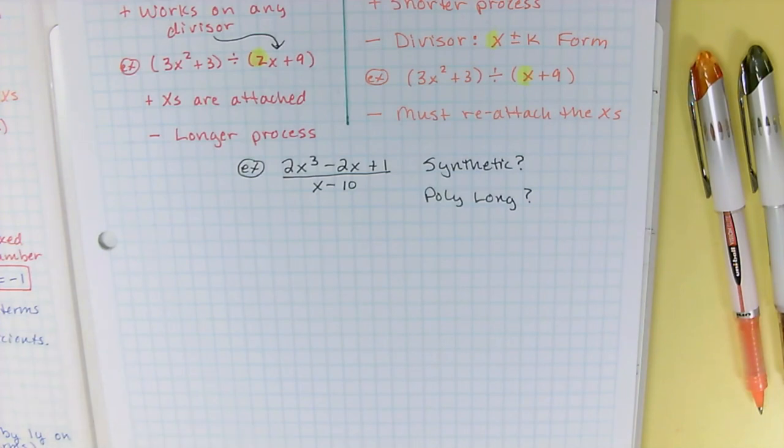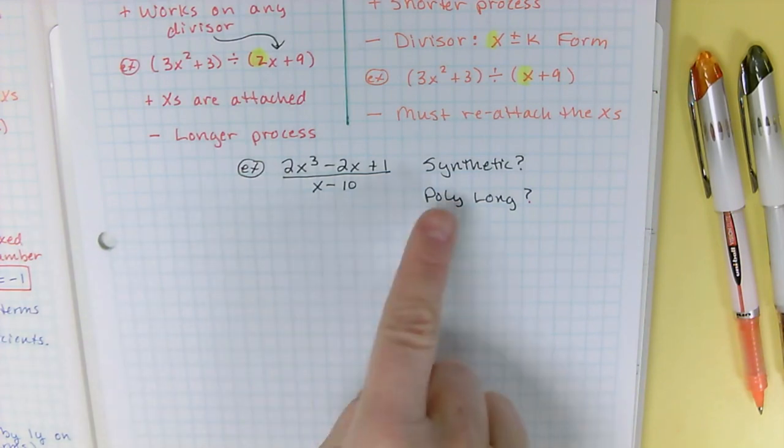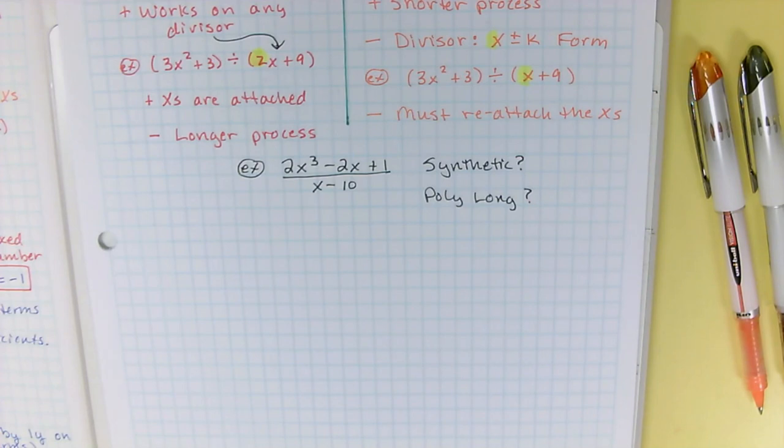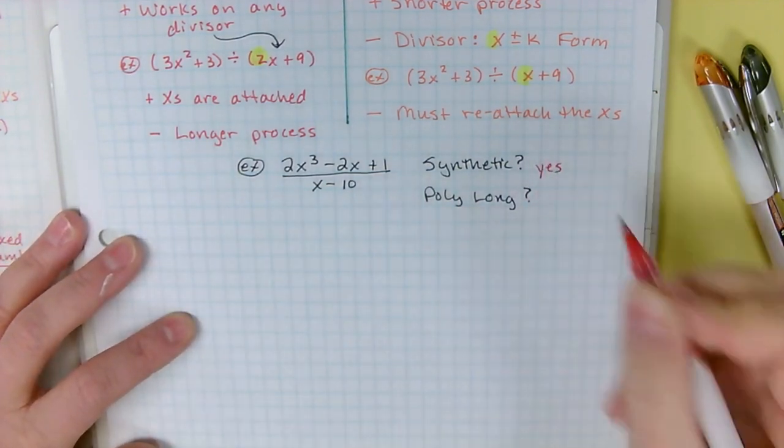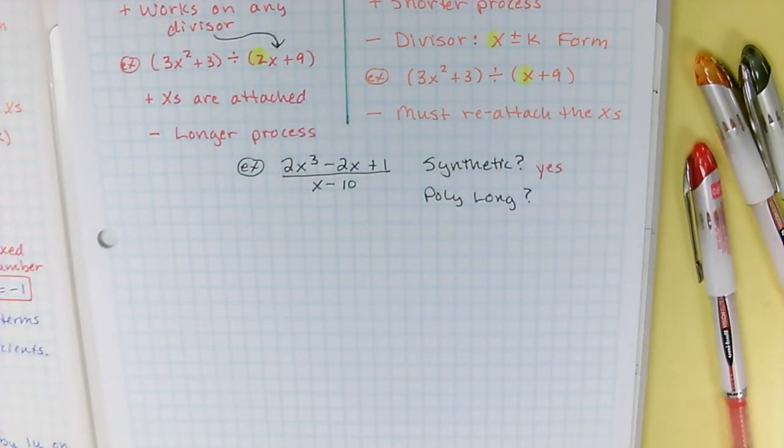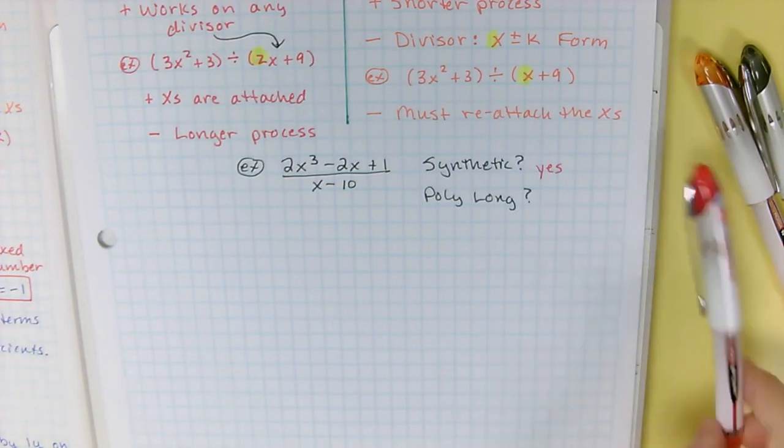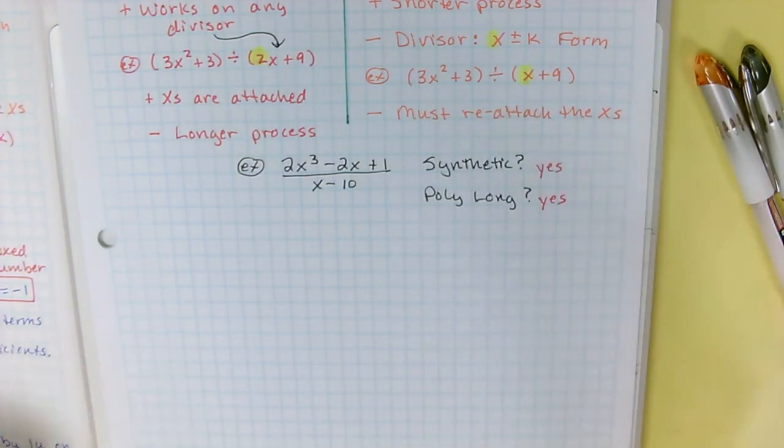Okay, so we're going to do thumbs up, thumbs down. Yes is up, no is down. So on this one, is synthetic possible? So I'm going to thumb up or thumb down? Felix, up. Yes, the ups have it. So yes, synthetic is definitely possible. Okay, thumb up, thumb down. Is polynomial long division possible? Got one more thumb. Okay, yes, poly long is also possible.